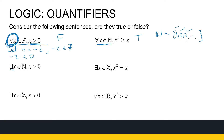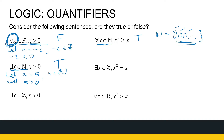Next: there exists a natural number that's greater than zero. Looking at the natural numbers, they're all greater than zero — but my statement only says there exists one. Let x equal five: five is a natural number and five is greater than zero. So that's true. I just needed one example. There may be many, but my statement only requires one because 'there exists' means I only need one.